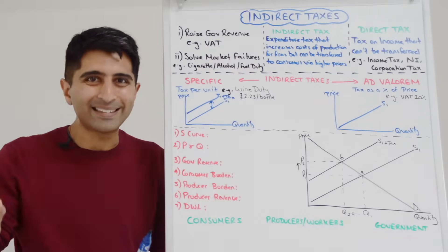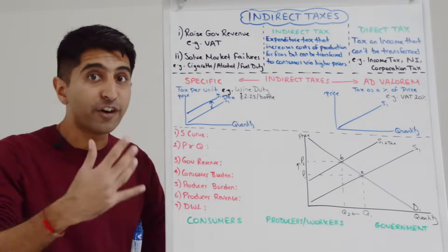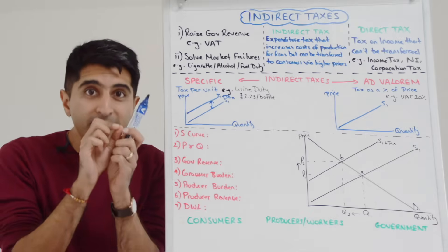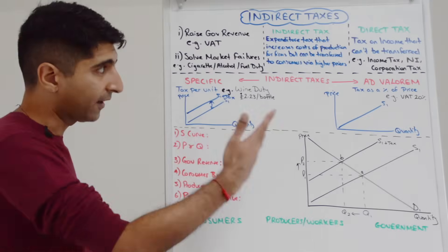So it doesn't matter whether it's the thousandth bottle being sold or the hundredth bottle being sold, each bottle is taxed exactly the same which is £2.23. So no matter where you look at that vertical distance it's always going to be the same unit value of the tax. That's what a specific tax does, a tax per unit.